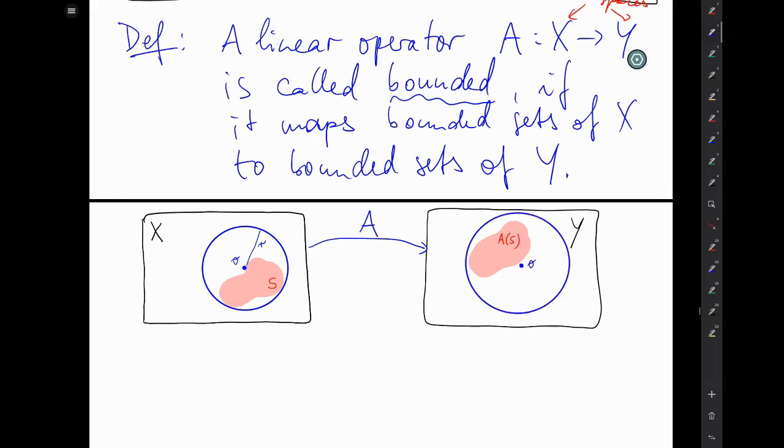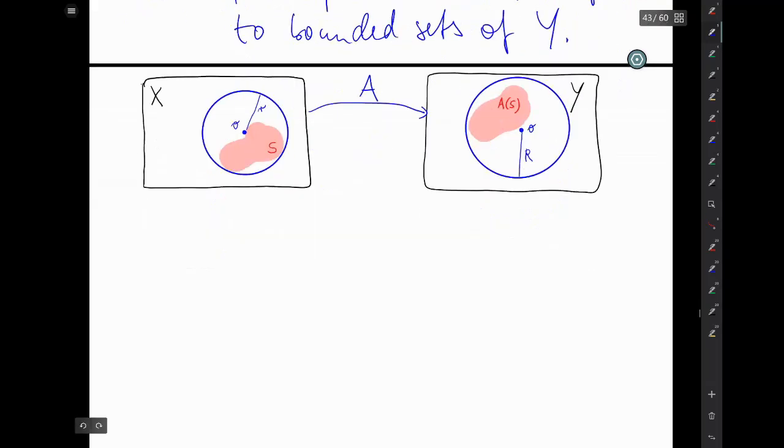We could also take the origin at the other side Y. Let's say of a radius capital R, because it's certainly not going to be the same as the radius of the first circle in X. Okay, so that's immediately what the definition says.